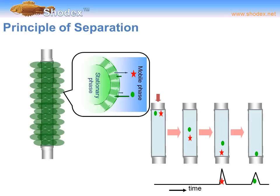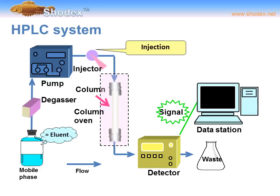Here we see a diagrammatic example of the interaction between the analytes — in this case two analytes, represented by a red star and a green sphere — with the stationary phase. As the analytes progress through the column, one will interact more strongly than the other based on chemical or physical interactions. The green sphere is retained more than the red star; the red star elutes faster and appears as a peak before the green sphere on the chromatogram.